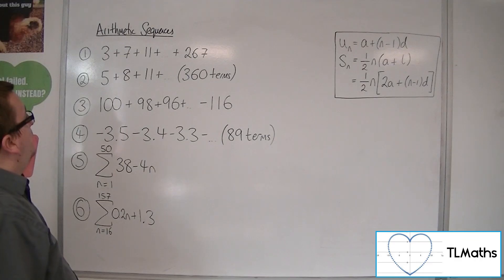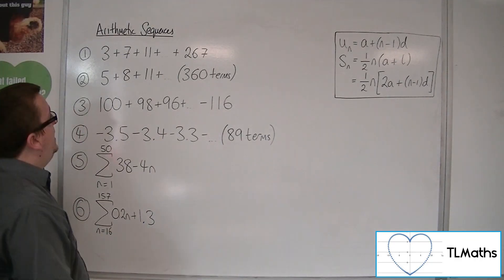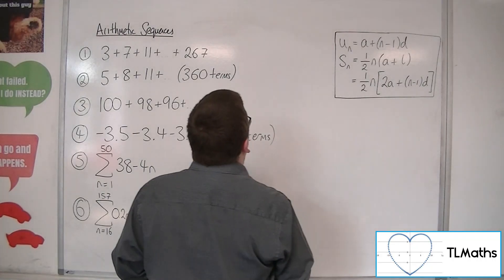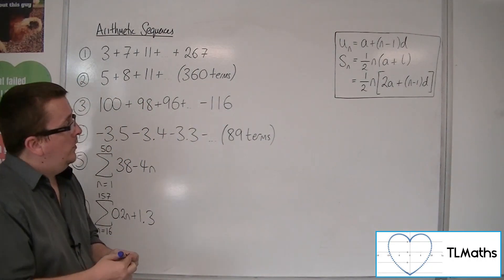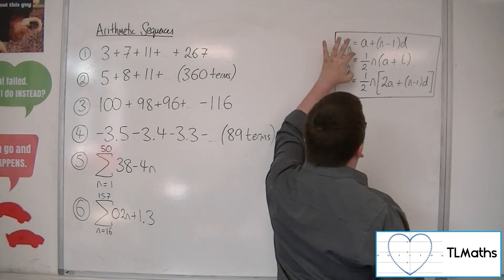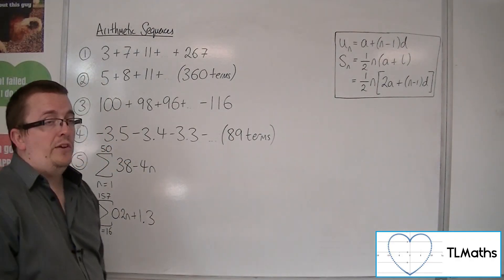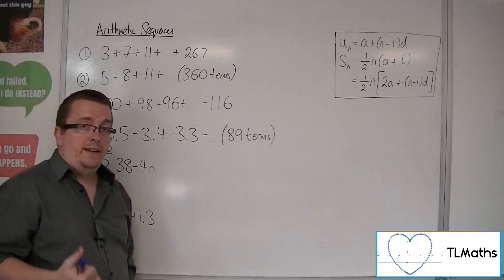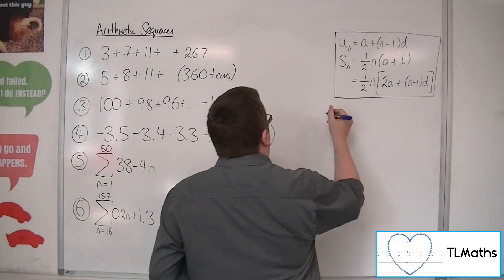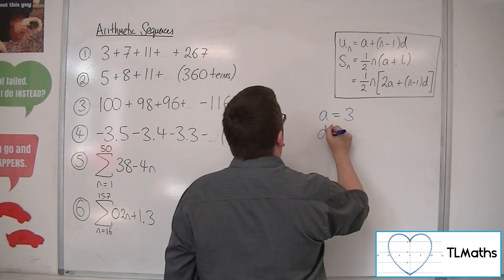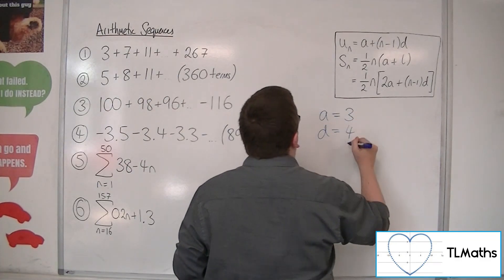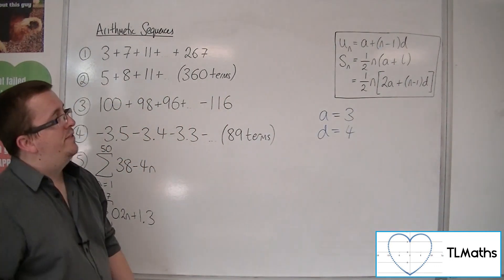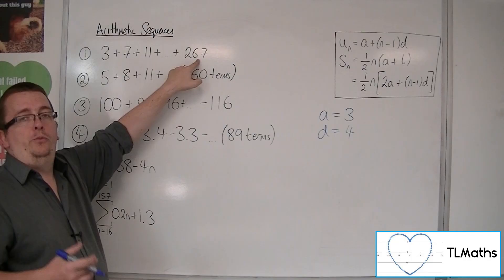Number one: 3 plus 7 plus 11 plus all the way up to 267. We know the first term and the last term, but we don't know how many terms there are. Although we know a and l, we don't know n, so we've got to work it out. We know the first term is 3 and the common difference is 4, because we're going up in 4s. So we can use the formula u_n equals a plus (n minus 1)d to work out what n goes with 267.